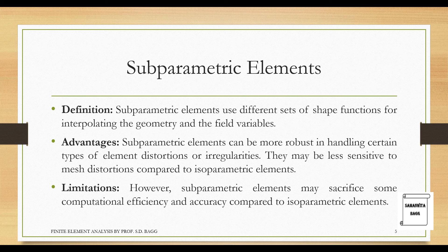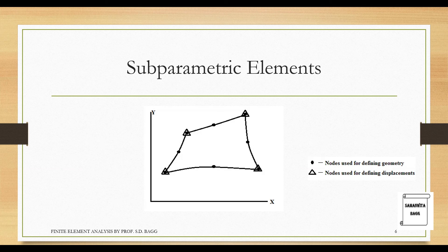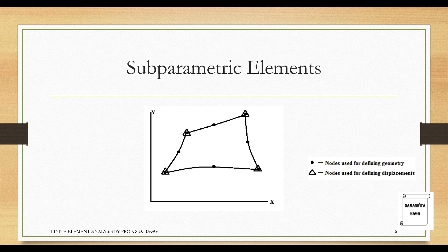However, subparametric elements may sacrifice some computational efficiency and accuracy compared to isoparametric elements. Here you would know why it is compromising all the efficiency and the accuracy. The reason is you can see that these dots indicate the nodes for defining geometry, that is 8 of them. And triangle represents the nodes used for defining displacement. So displacement is defined only at 4 points. So you have only 4 shape functions and the rest will not move. Because of which you will not be able to compute the displacement at all the points. So we would prefer using isoparametric elements in case of any analysis and not go for subparametric elements.